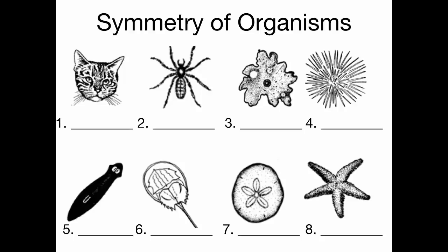Here are some more organisms. This cat has bilateral symmetry — draw a line right down the middle and it has two equal sides. What about this spider? It's not radial, because you can only draw a line one way splitting it in half. That's bilateral.